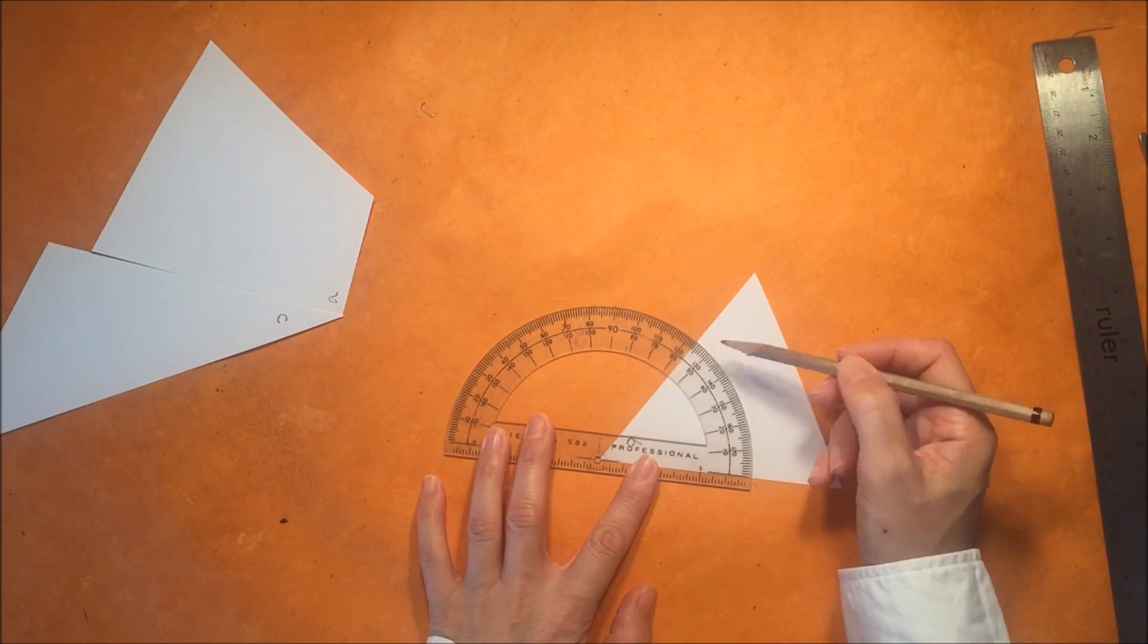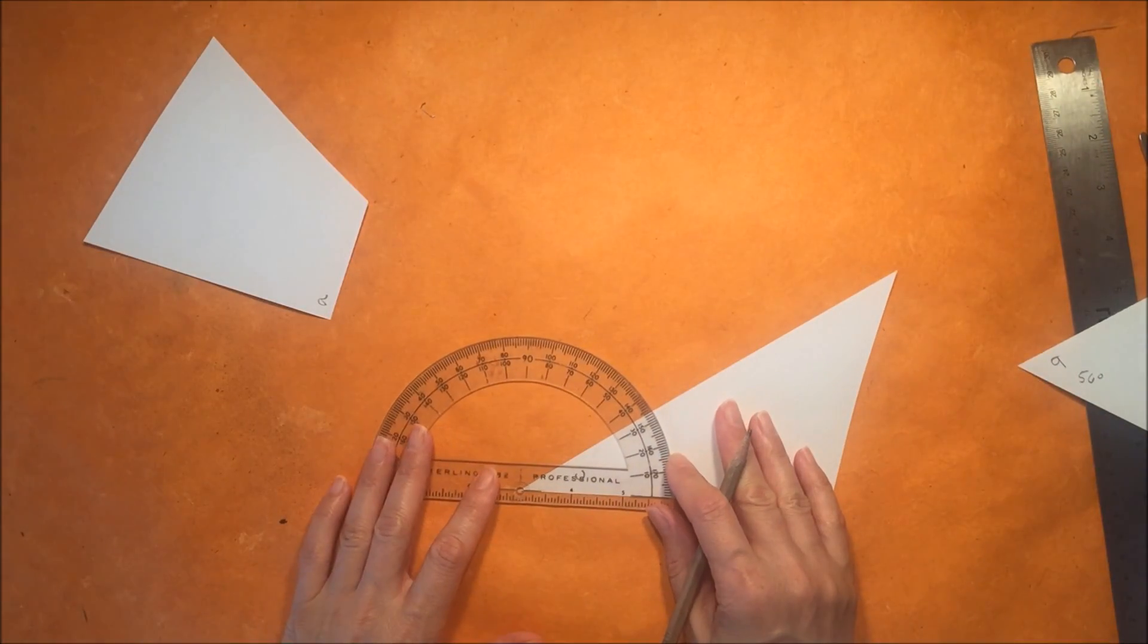I am just positioning my protractor so that the zero part is at the tip of the angle that I'm measuring.